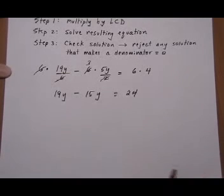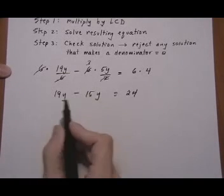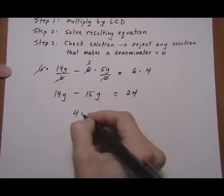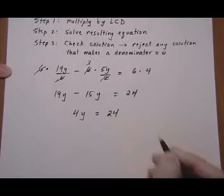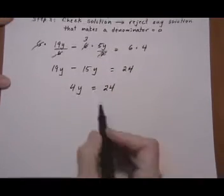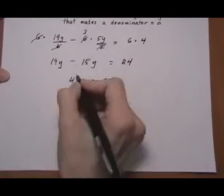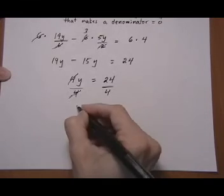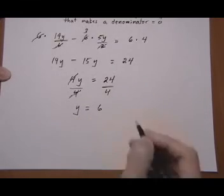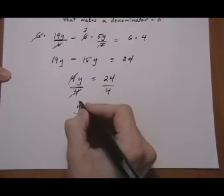And we just keep solving the equation with the normal steps that we use. Combine like terms. 4y equals 24. Then we use the multiplication property to divide both sides by 4. Gets rid of the 4s. We get y all by itself, which is what we want. Y equals 6.